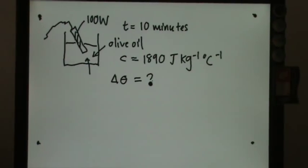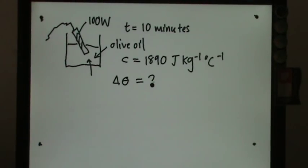In this question, we have a cup of olive oil. The specific heat capacity of olive oil is 1890 Joules per kg per celsius. There's an immersion heater here, 100 Watt, connected to electrical supply. It has operated for 10 minutes, and we're interested to find out how much is the temperature rise.